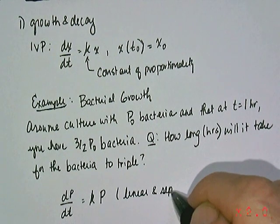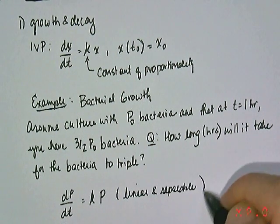So the rate of change of the bacterial population satisfies this growth model. It's constant proportional times how much population you have. So this differential equation that I've written dP dt equals K times P certainly is linear and separable. Very straightforward to solve. We already know how to solve those.